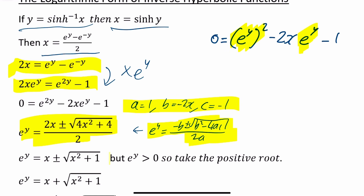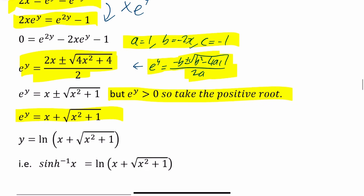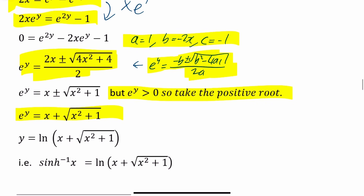But e to the y is always positive — the exponential graph is always above the x-axis. So if you took the negative root, e to the y would be negative, which is impossible. Therefore you must take the positive root. Taking the natural log of both sides, y equals ln of that expression, giving the final result: inverse hyperbolic sine of x equals ln of x plus the square root of x squared plus 1.